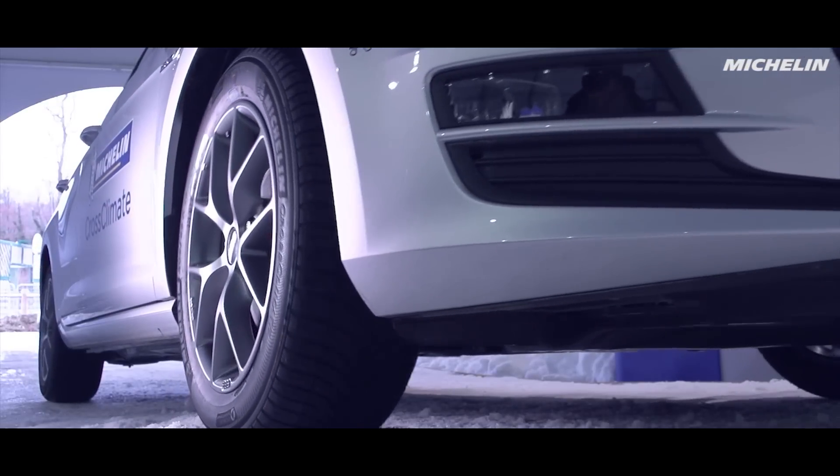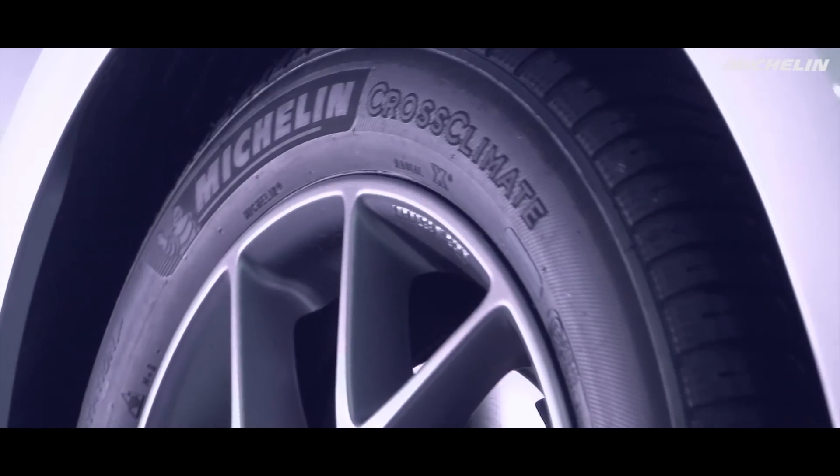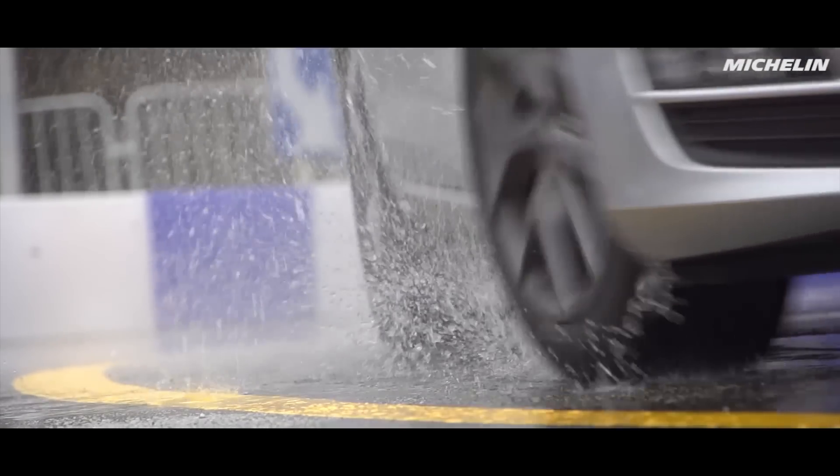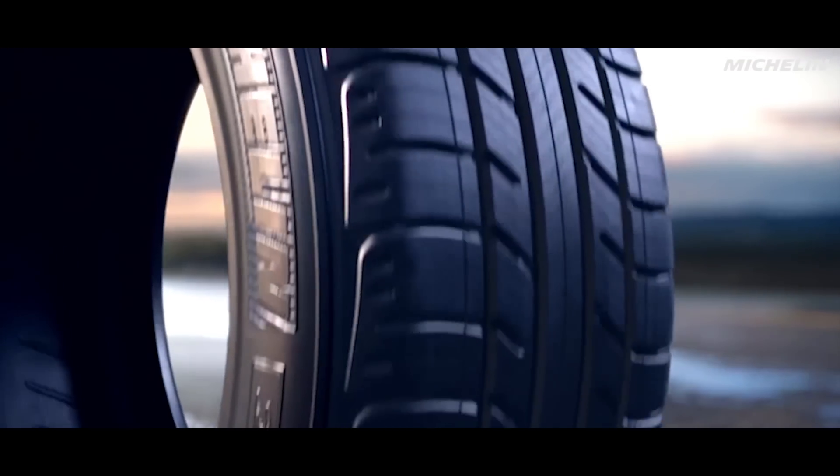In passenger car and light truck tires, the Cross Climate Tire's V-shaped tread, combined with new self-locking 3D sipes, enhances vehicle traction in summer and winter alike.